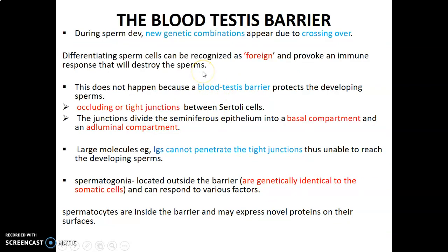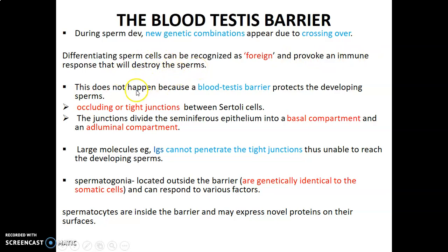So we have what you call the blood-testis barrier. During the development of the sperm, you have new genetic combinations because there is meiosis, and new combinations are mainly due to crossing over that occurs in meiosis. So differentiating sperm cells can be recognized as foreign and may provoke an immune response that may destroy the sperms. But usually this does not happen because of the presence of the blood-testis barrier, which prevents recognition of the sperms as foreign and therefore protects the developing sperm.